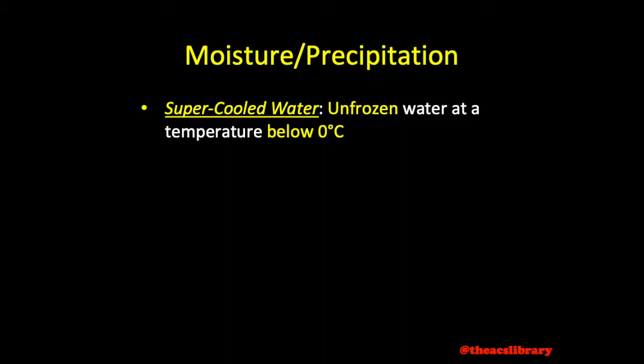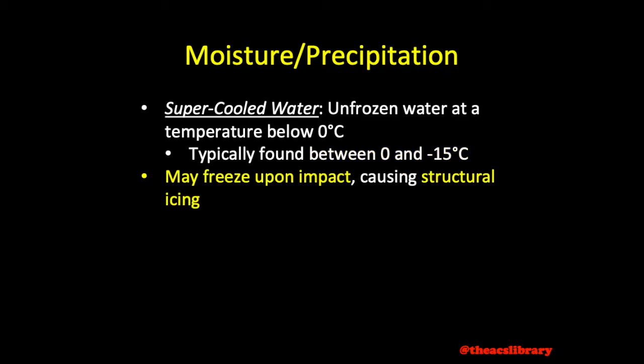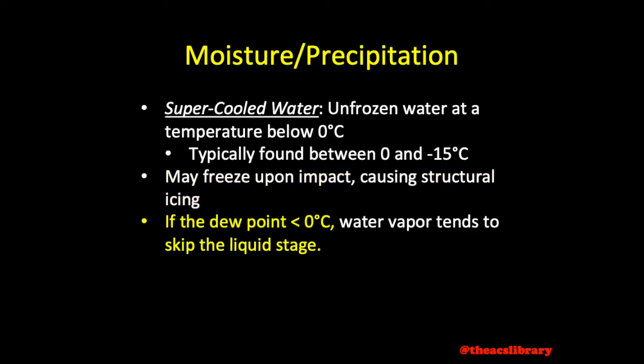The term supercooled water refers to unfrozen water at a temperature below zero degrees, typically between zero degrees and negative 15 degrees Celsius. Below negative 15 degrees the water is normally found in the form of already frozen ice. However, supercooled water has been found at temperatures as low as negative 40 degrees Celsius. These droplets can become dangerous in flight as the supercooled water freezes upon impact, resulting in aircraft icing. When the dew point is below freezing, water vapor sublimates directly into ice, skipping the liquid stage.